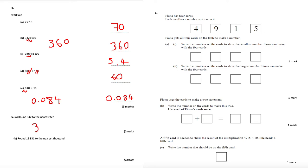Question 5a: round 342 to the nearest 10. The tens column is where the 4 is; looking at the units digit 2, which is below 5, so I round down. 342 is closer to 340 than to 350, so the answer is 340. Part b: round 12,831 to the nearest thousand. The thousands column is 2; looking at the hundreds digit 8, which is above 5, so I round up to 13,000.